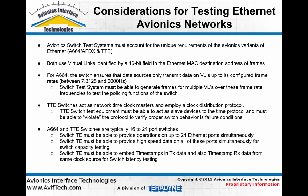For ARINC 664, the VLs can be configured to transmit frames at rates from about 8 Hz up to 2000 Hz. Therefore, a test system simulating an ARINC 664 end node communicating with a switch must be able to generate ethernet traffic within this range of rates for a large number of VLs on a single ethernet network interface in order to verify the ARINC 664 traffic policing feature of a switch.